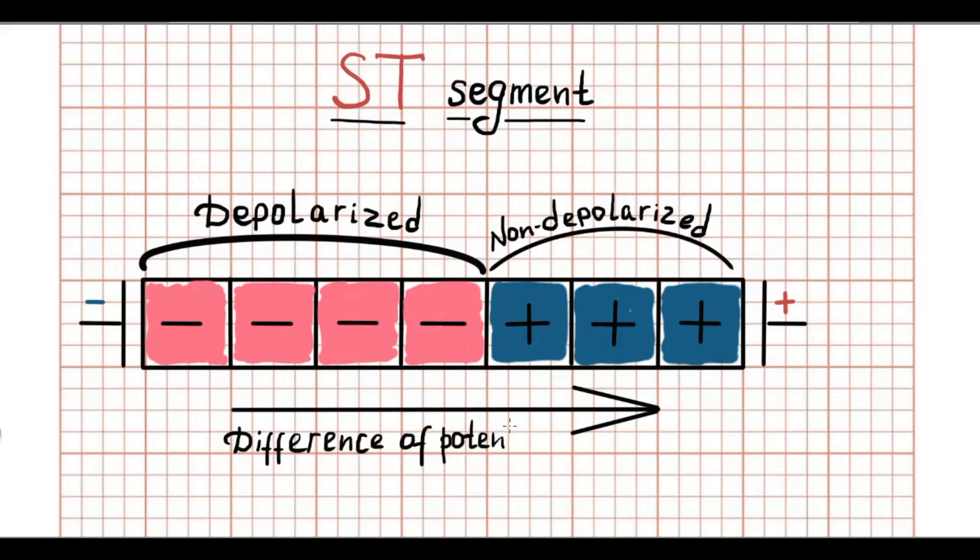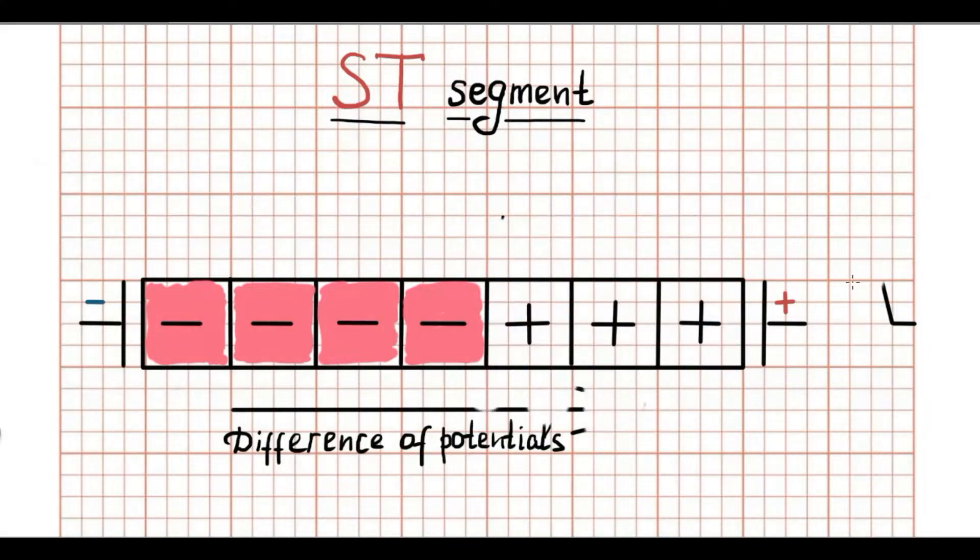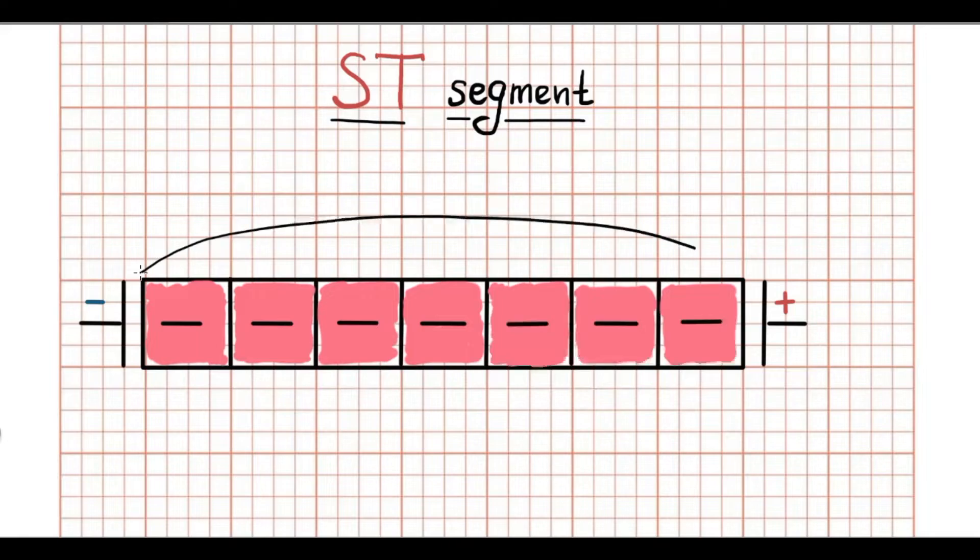This difference of potentials is directed from negative to positive charges and can be detected by ECG machine as a wave. But when all myocardial tissue is depolarized, it means all myocardium has the same negative charge. So in this case there are no difference potentials.